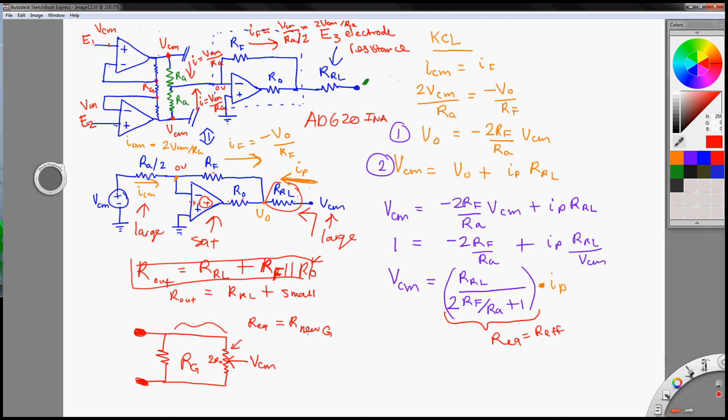This is the new Rg. So for AD620, the gain is actually set by 1 plus 49K something over Rg. So by putting a resistor in parallel, you would change Rg. Otherwise you wouldn't have to worry about it. So just keep that in mind. But once you figure that out, you can compensate.